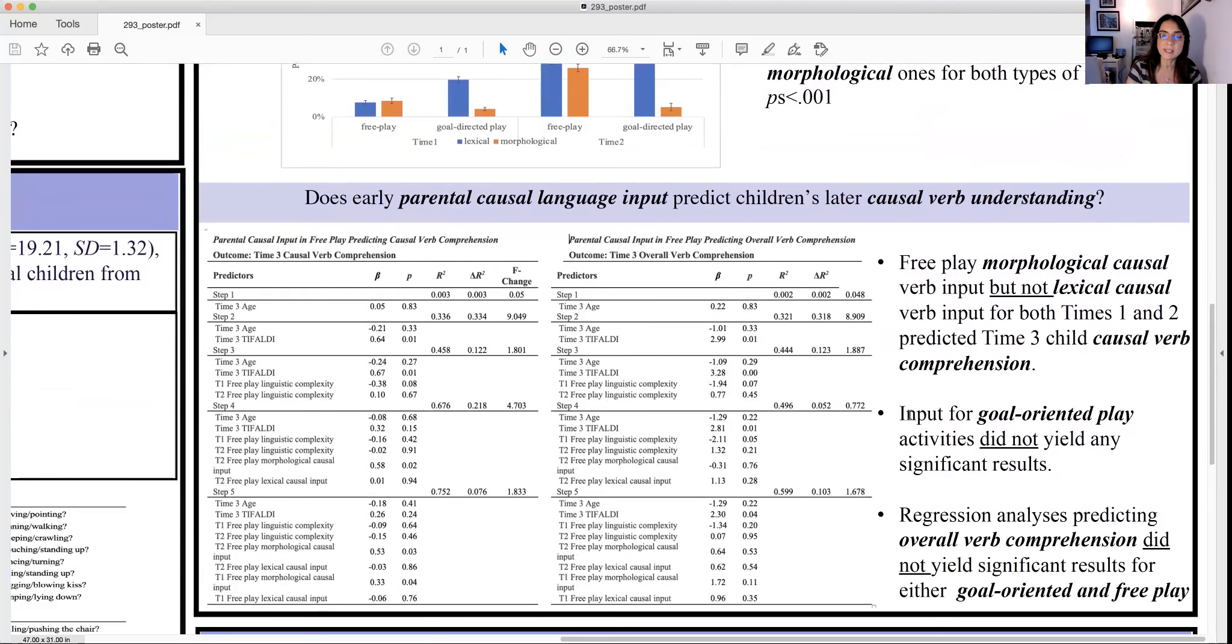When we investigate whether there are longitudinal links to a child's later causal verb understanding, we saw that free play morphological causal verb input, not the lexical causal input for times one and two, predicted time three child causal verb comprehension. It is not the lexical but the morphological ones, which is used less often actually. This is only valid for free play toys, not for goal-oriented play toys.